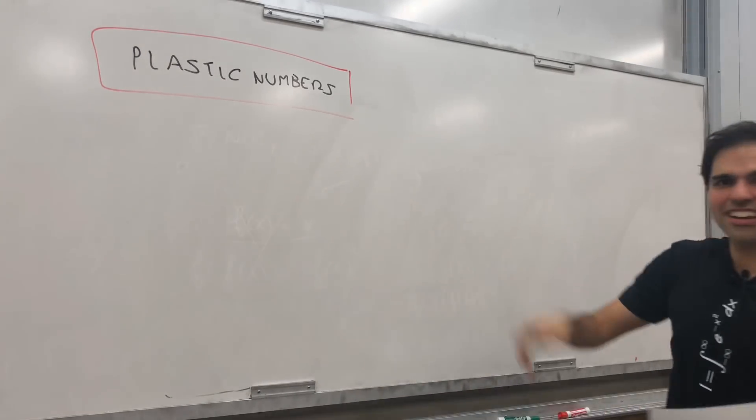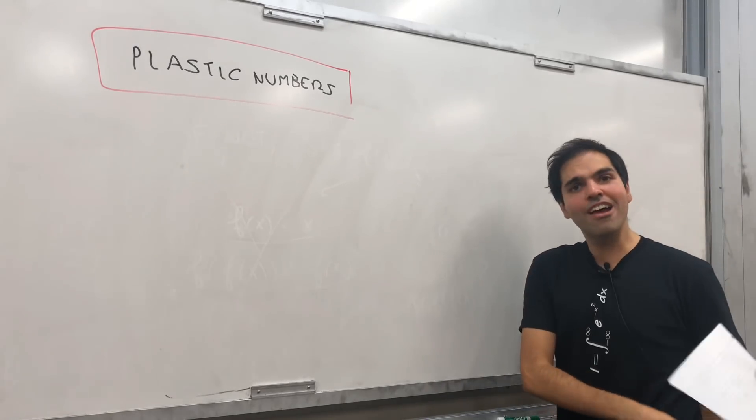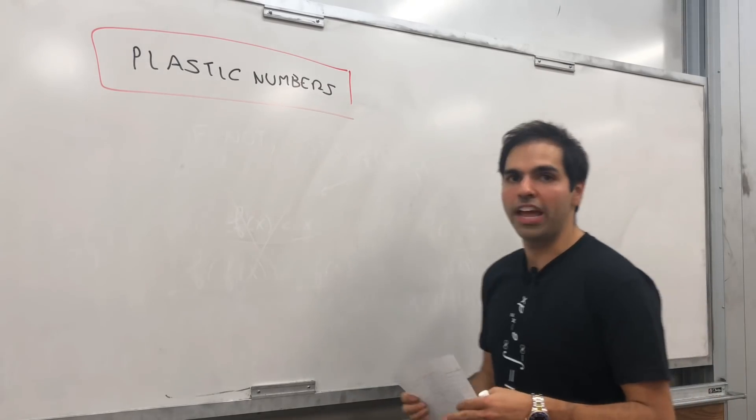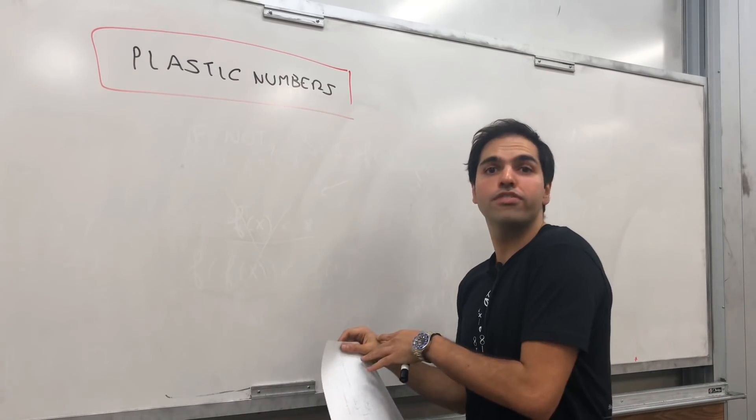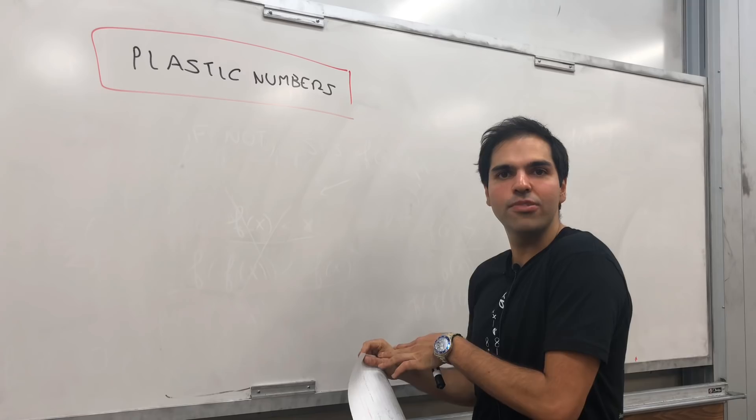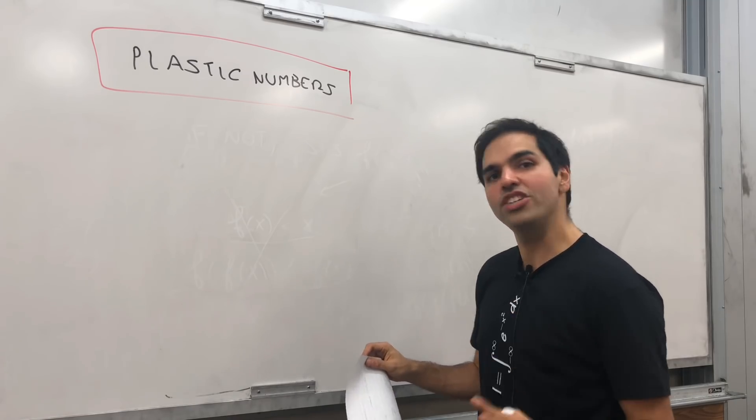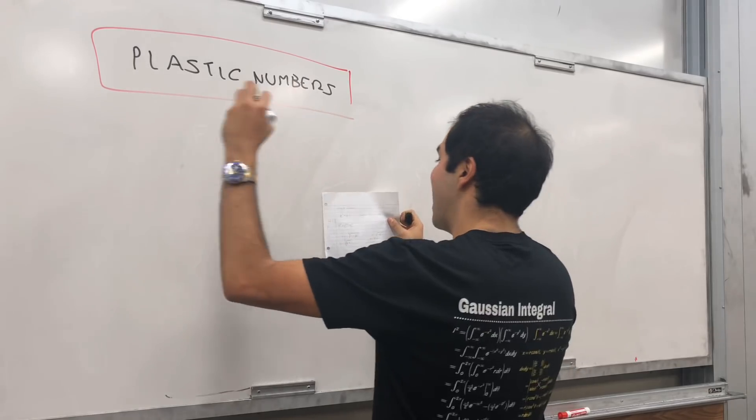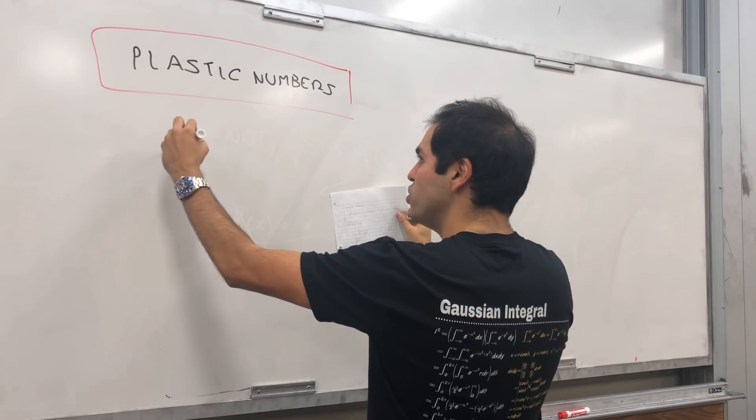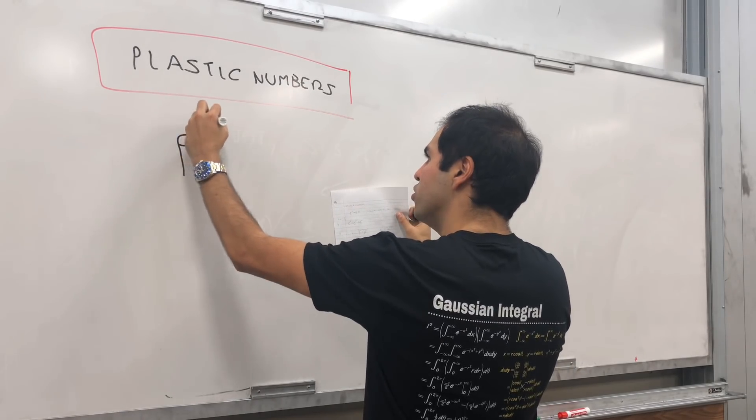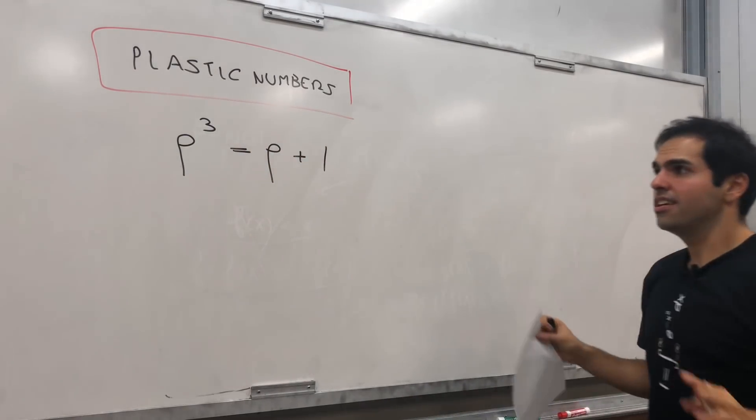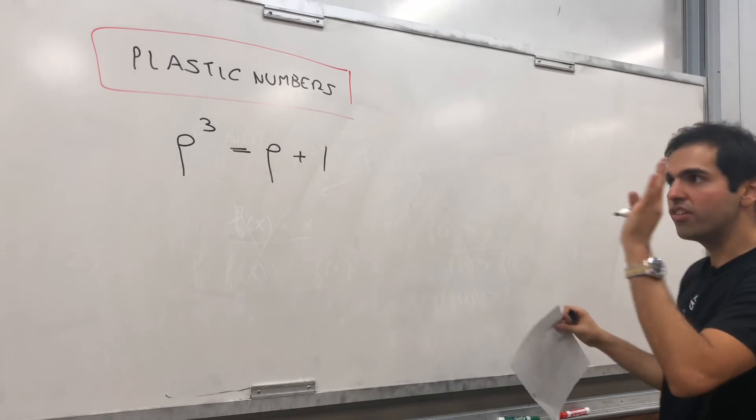All right, so what are the plastic numbers? They were a very neat generalization of the Fibonacci sequence, but in another way. Because another way of generalizing the Fibonacci sequence is with metallic ratios, but that's a story for another day. So what are the plastic numbers? There's solutions of the equation rho cubed equals rho plus 1. I guess there's one real solution for it.